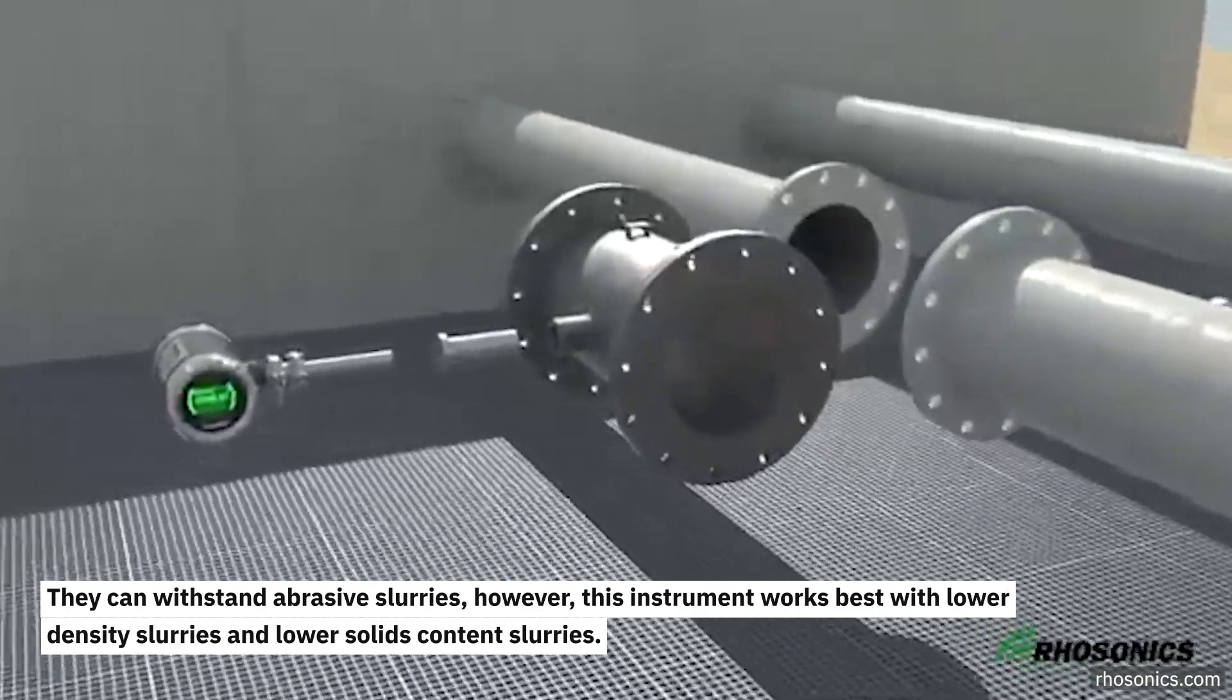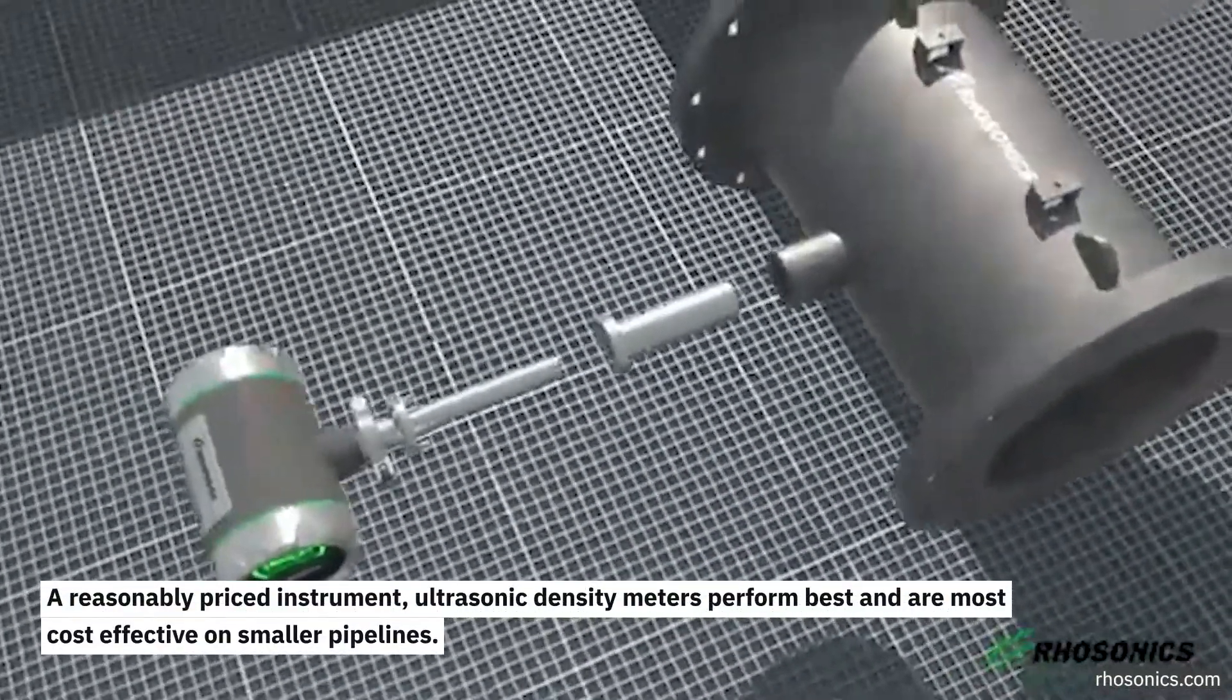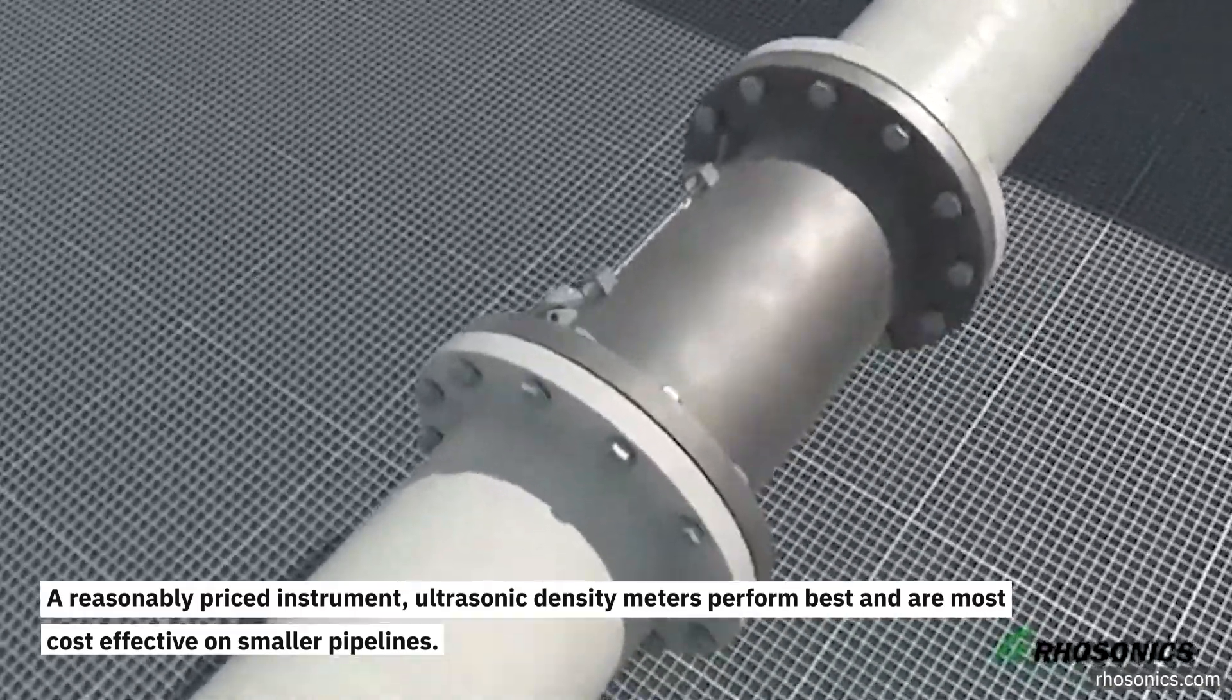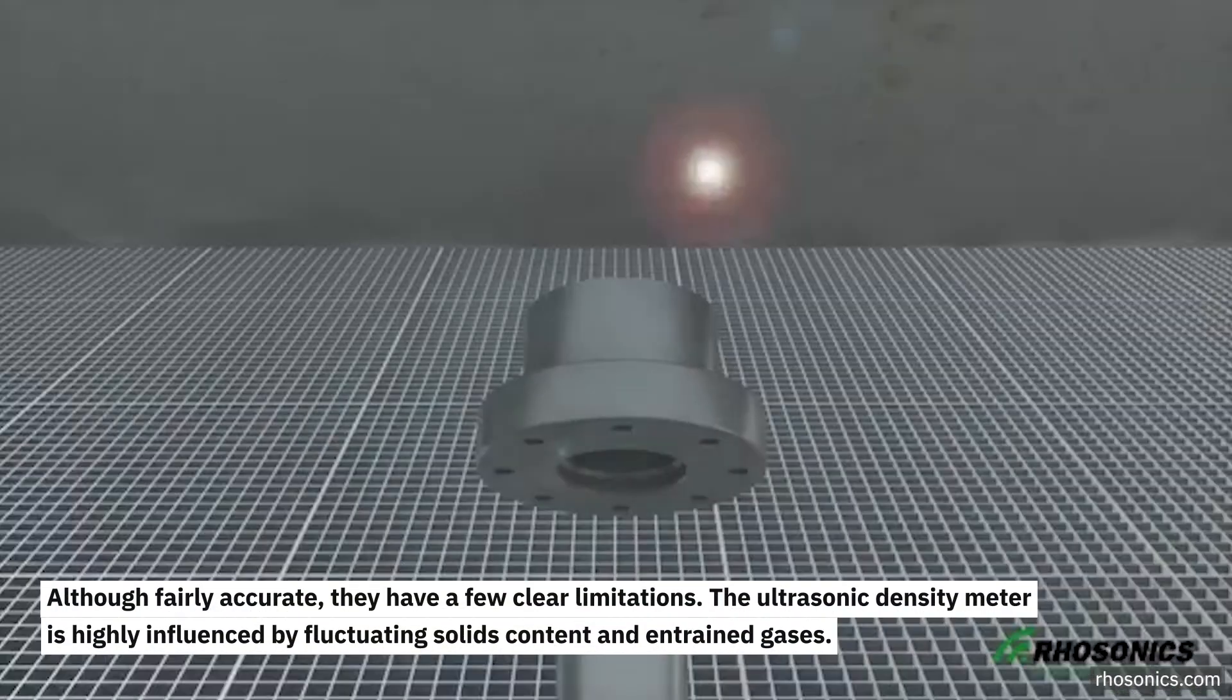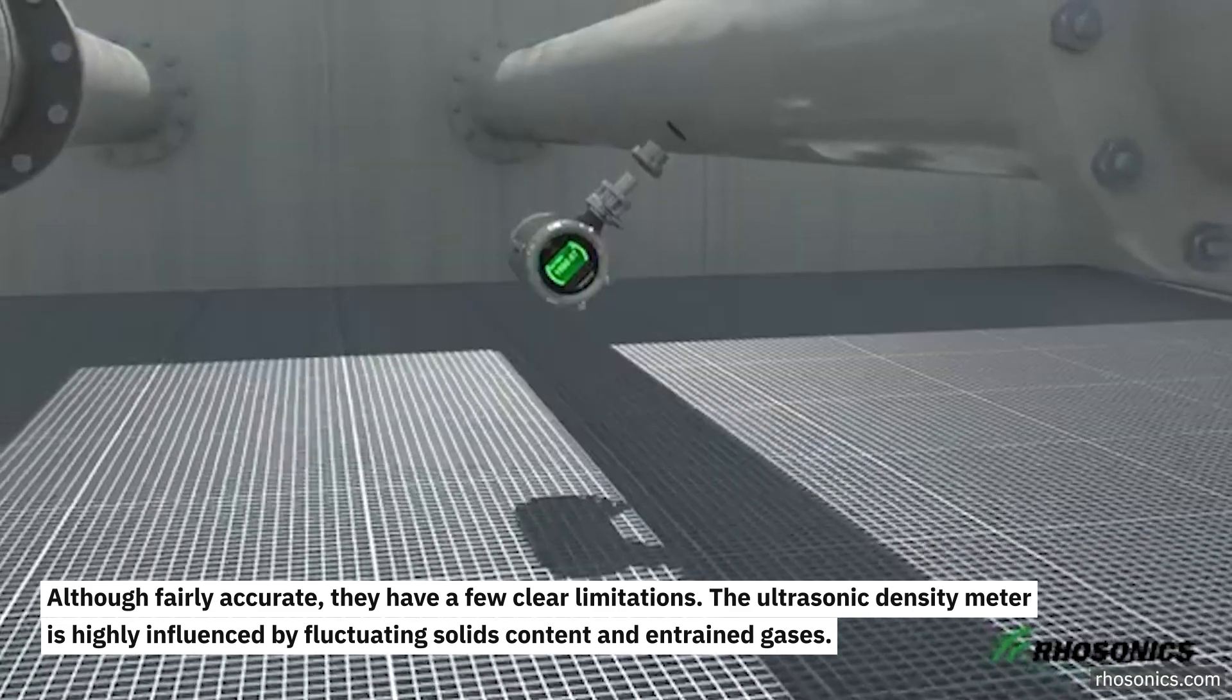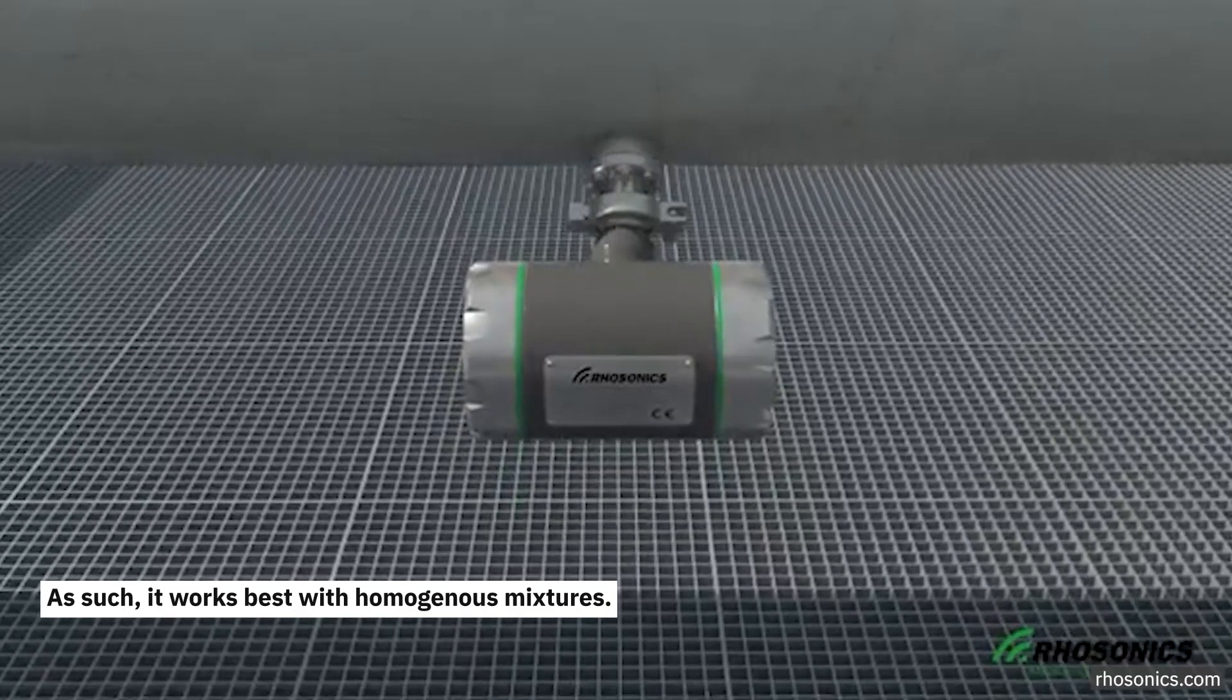A reasonably priced instrument, ultrasonic density meters perform best and are most cost-effective on smaller pipelines. Although fairly accurate, they have a few clear limitations. The ultrasonic density meter is highly influenced by fluctuating solids content and entrained gases. As such, it works best with homogeneous mixtures.